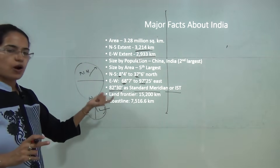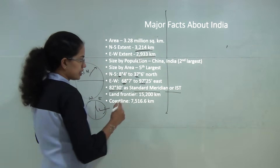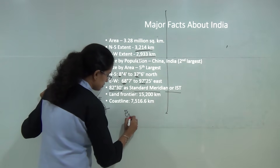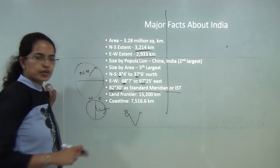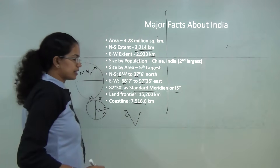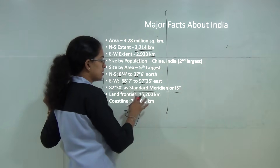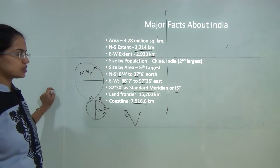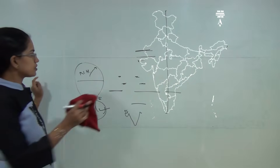India has a coastline of 7516.6 kilometers. In contrast, the land frontier is much wider, at nearly double that — approximately 15,000 kilometers.